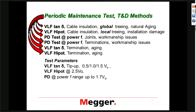VLF Tan Delta can also be an indication of aging in terminations. Especially when you look at the delta Tan Delta — where you look at the change of Tan Delta over different voltage steps — it can be a very good indicator of problems in terminations. Simply because you can have a lot of leakage on aged terminations, and that creates this effect. If we use a VLF hypot test on a termination, we have a choice between hypot testing and diagnostic test methods.